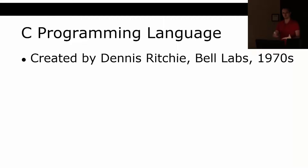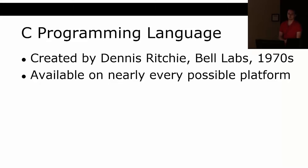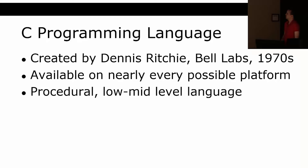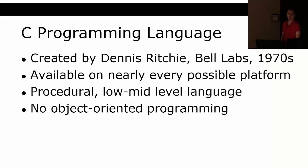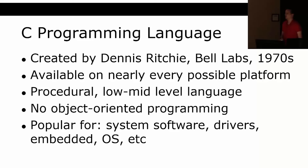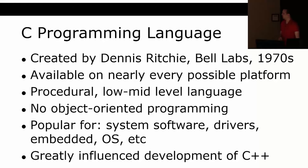Before getting deeper into C++, it's built on the C language, created by Dennis Ritchie at Bell Labs in the 1970s. C is on your toaster — it's crazy how widely supported it is. It's a procedural, low-to-mid-level programming language with no object-oriented programming, no classes you can inherit from, and no polymorphism. It's very popular for system software, drivers, embedded programming, and operating systems, and it greatly influenced the development of C++.